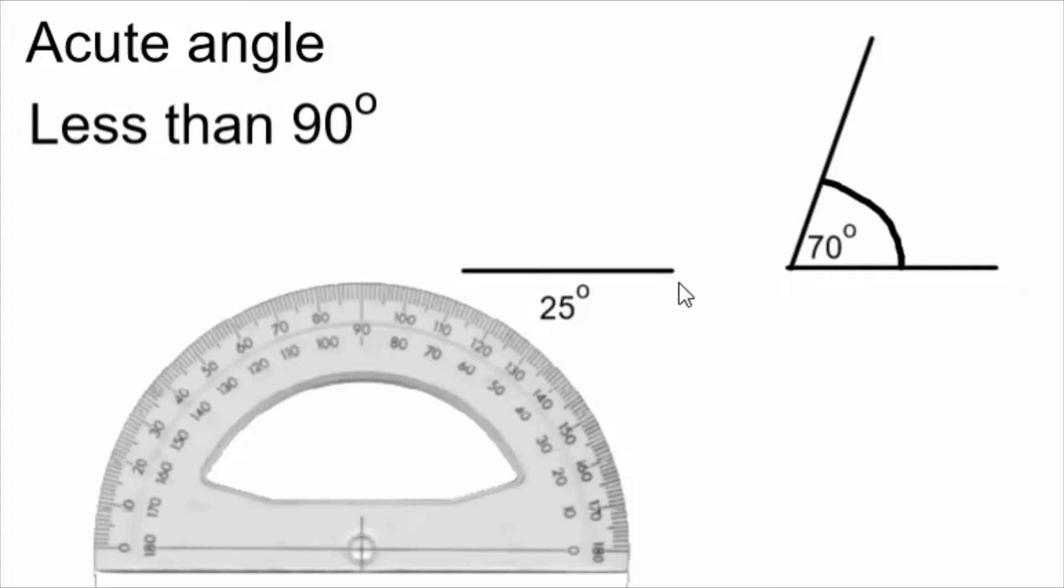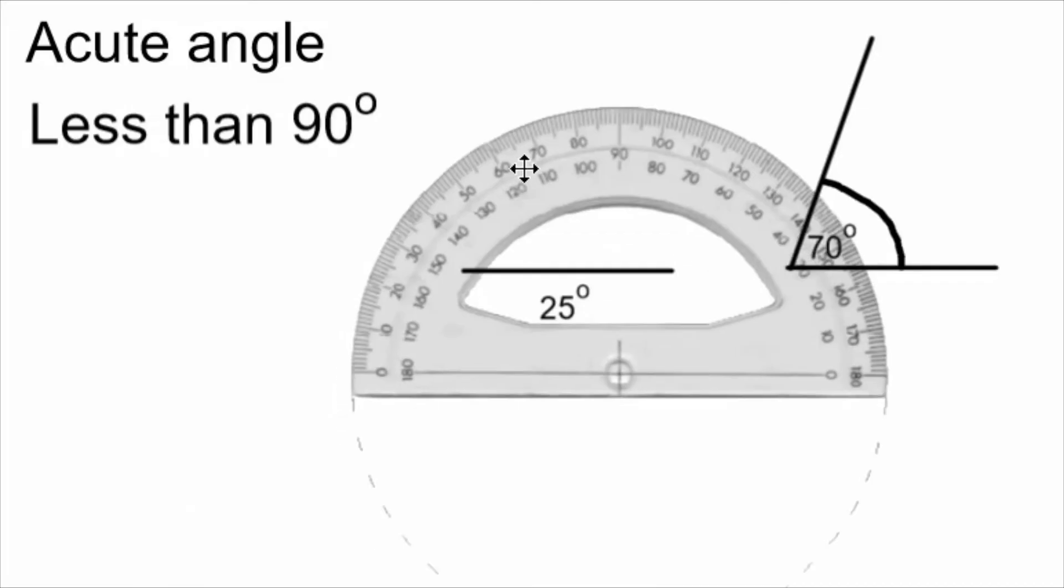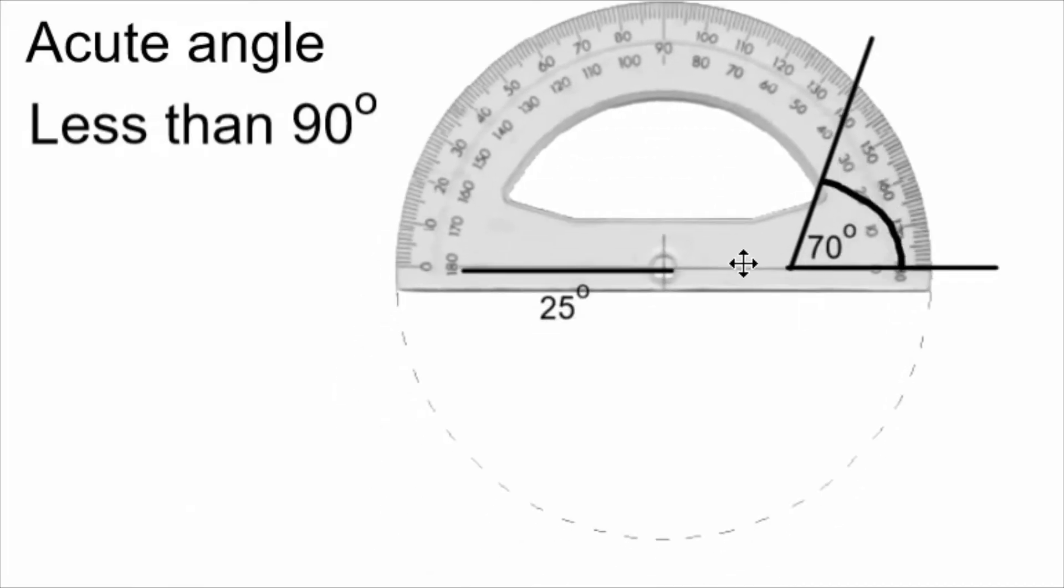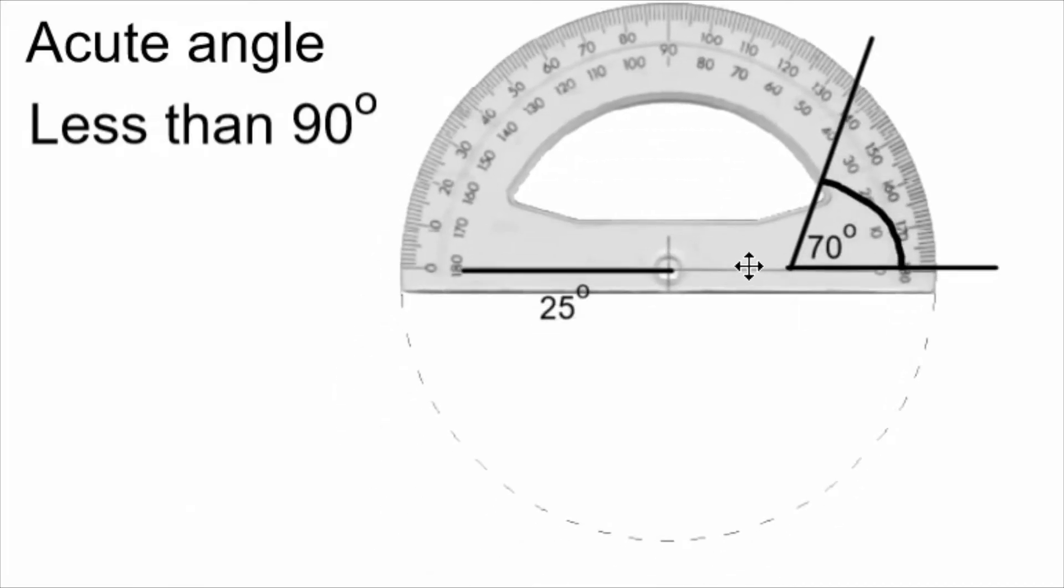I'm going to draw the angle on the other side. I put my protractor so that the zero dot is on that end of the line, and I count up to 25. Notice now I can't use the inner set of numbers. When I'm on this side of the protractor, I have to use the outer set of numbers, and I count up to 25 there.